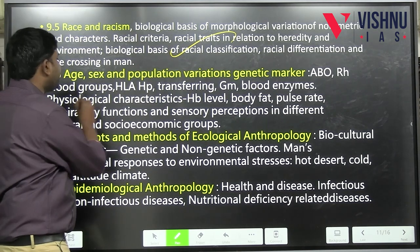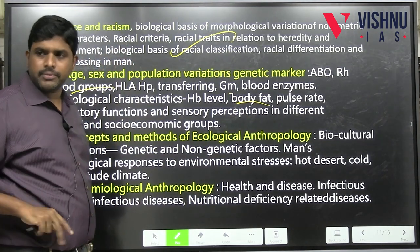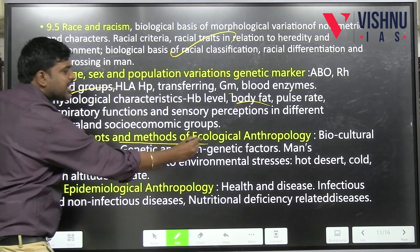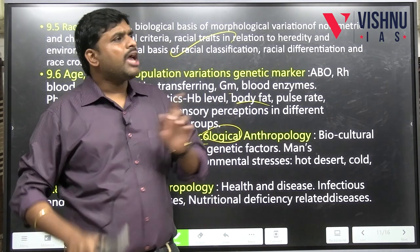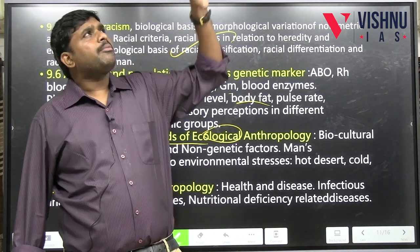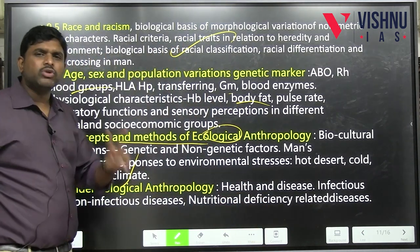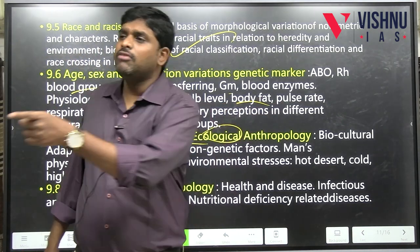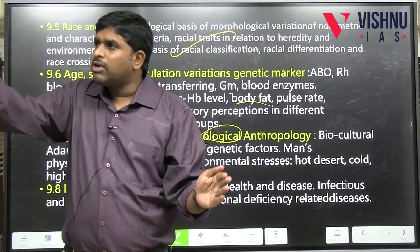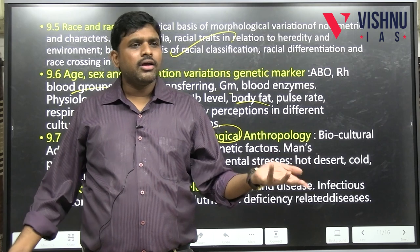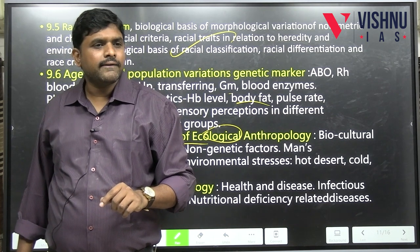Unit 9.6 covers blood groups, blood enzymes, and body fat composition. Unit 9.7 is ecological anthropology — how man adapts to cold, hot, and high-altitude environments. Unit 9.8 is epidemiological anthropology — infectious/communicable diseases vs. non-infectious/non-communicable diseases. Add current affairs from science and technology: monkeypox, Marburg virus, lumpy skin disease, tomato flu — declared a world pandemic by WHO.